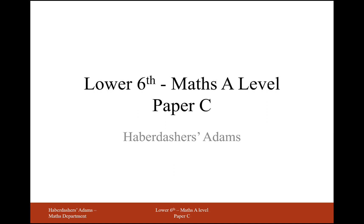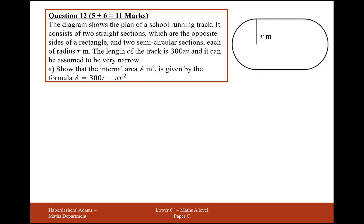Hello there and welcome to Level 6 Maths A Level Practice Paper C. Here we're working on Question 12, a differentiation optimization question. The diagram shows the plan of a school running track. It consists of two straight sections which are opposite sides of a rectangle, and two semicircular sections each of radius r meters. The length of the track is 300 meters all the way around and it can be assumed to be very narrow. Show that the internal area A meters squared is given by the following formula.